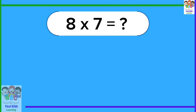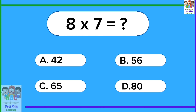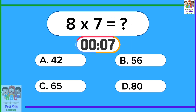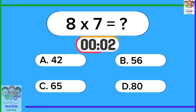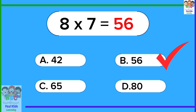8 times 7 equals? 56. 8 times 7 equals 56.